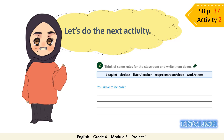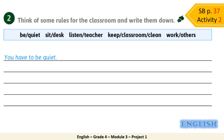Please refer to student book page 37, Activity 2. Let's do the activity together. Think of some rules for the classroom and write them down. We will use the ideas in order. Let's start with the first idea — be quiet. The sentence is given to you: You have to be quiet, because you and your classmates need to understand the lesson. Next idea — sit at desk. Your sentence would be: You have to sit at your desk. Notice grade 4 that the sentences end with a full stop and they start with a capital letter.